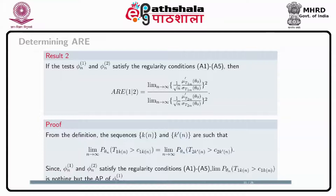From the definition of sequences k_n and k prime_n, the probability that T1_{k_n} greater than C1_{k_n} under theta_n and the probability that T2_{k prime_n} greater than C2_{k prime_n} under theta_n have the same limit as n tends to infinity. Since phi_n1 and phi_n2 satisfy regularity conditions A1 to A5, these two limits are the asymptotic powers. The limit of the probability under theta_n of T1_{k_n} greater than C1_{k_n} is the asymptotic power of phi_n1.